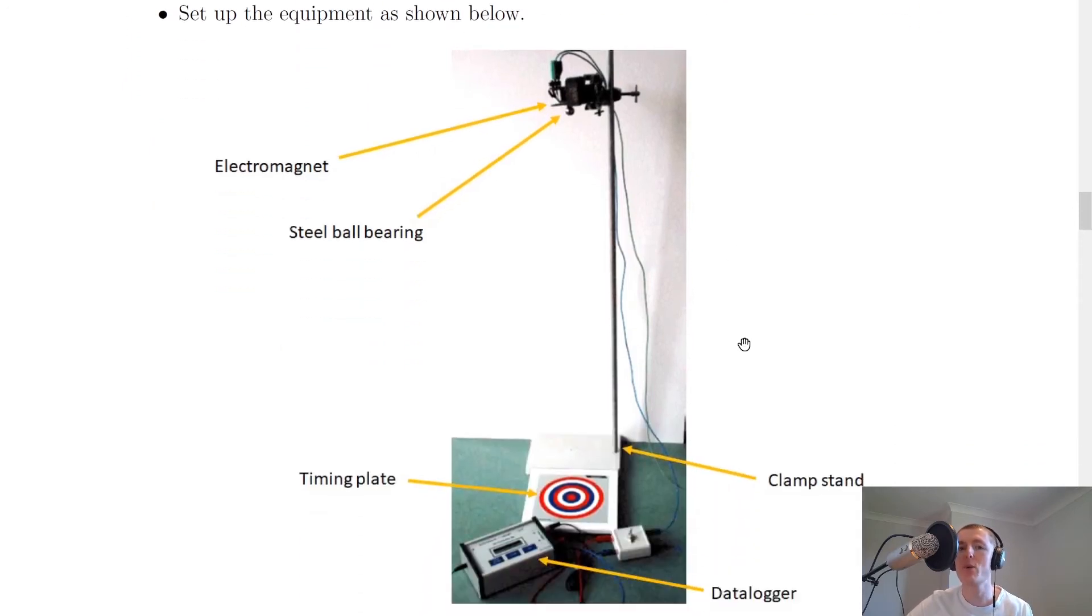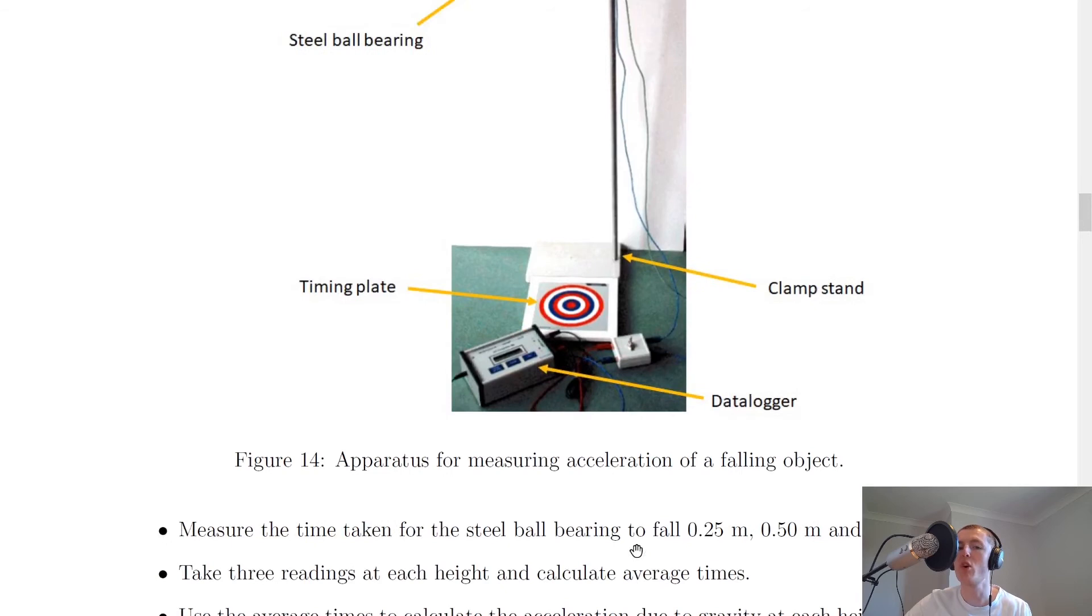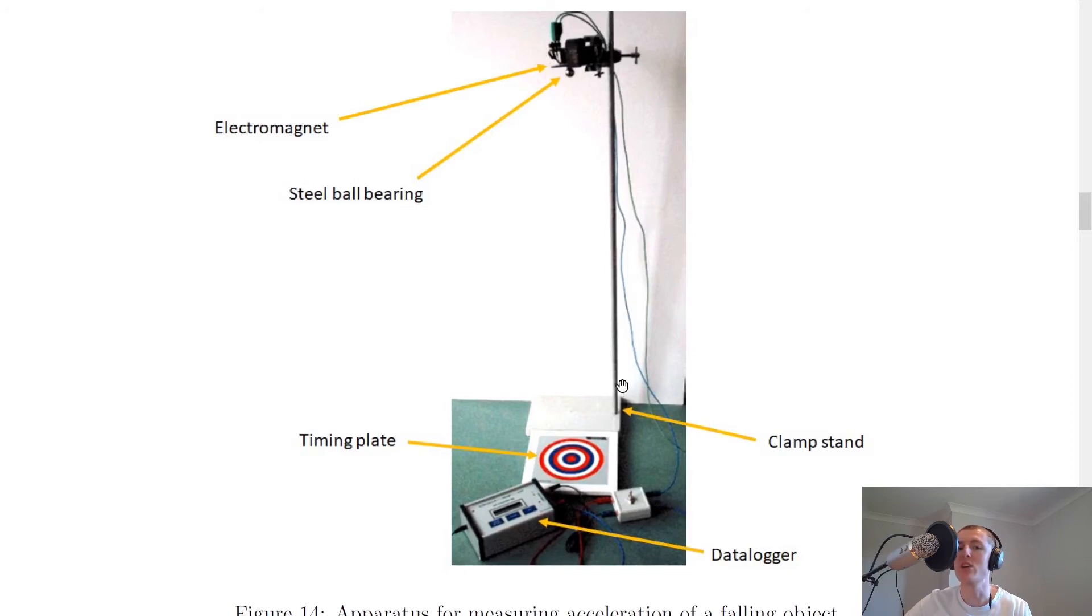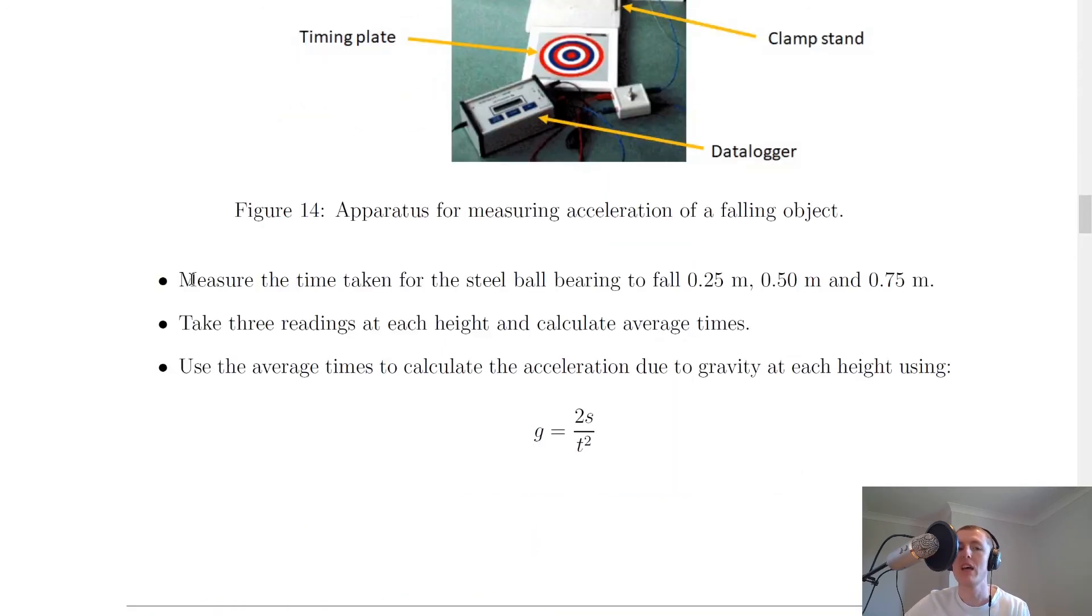You then set up the equipment as shown in this picture here. So up the top, we've got our electromagnet and the electromagnet is connected to our timer and the timer is then connected to a timing plate. And initially the steel ball bearing is magnetized to the electromagnet when the electromagnet is switched on. So in order to get the ball to drop, we need to switch off the electromagnet using this switch here. Now the electromagnet is held at a certain height using the clamp stand and the data logger or timer over here is going to measure our time for the ball to fall. And if we look here, it describes the steps that we would take to do this experiment.